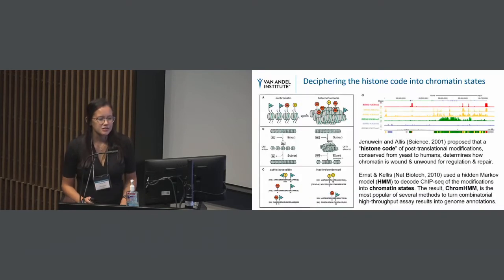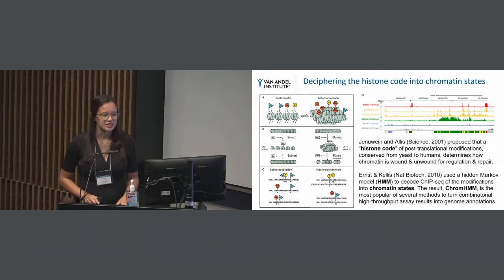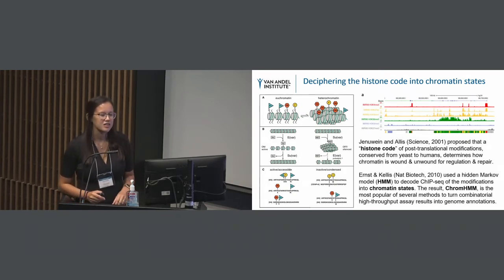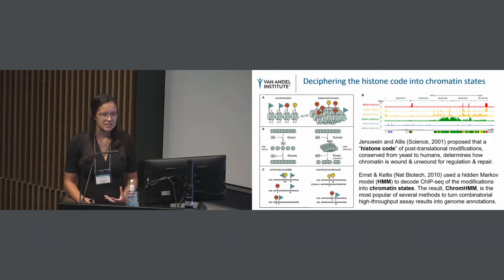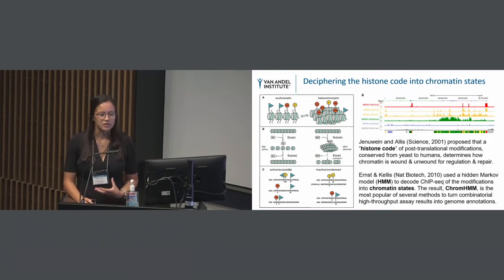So in 2001, Genuine and Alice proposed that these histone modifications could be thought of as a histone code, which is conserved across many organisms from yeast to humans, and it dictates the instructions for which chromatin is wound and unwound, controlling regulation and repair.